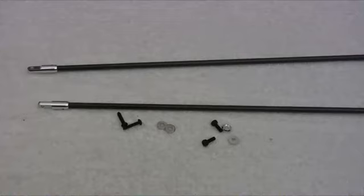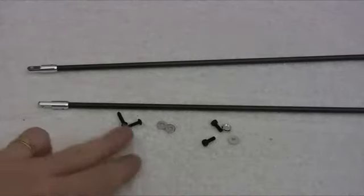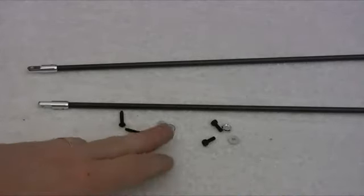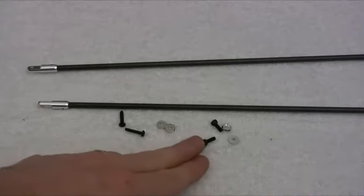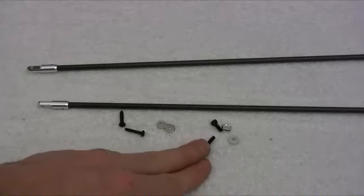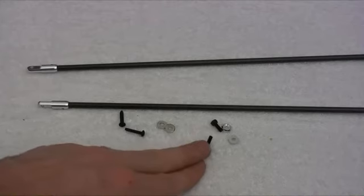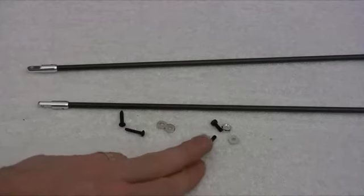Okay, so here we have our tail boom supports. We've got these long self-tapping screws which go in the frame end of the boom support, and then we have these bolts, fairly short bolts, which go up into the horizontal fin clamp end. And don't forget to Loctite these as well as they are screwing into metal, so I'll go ahead and install these.